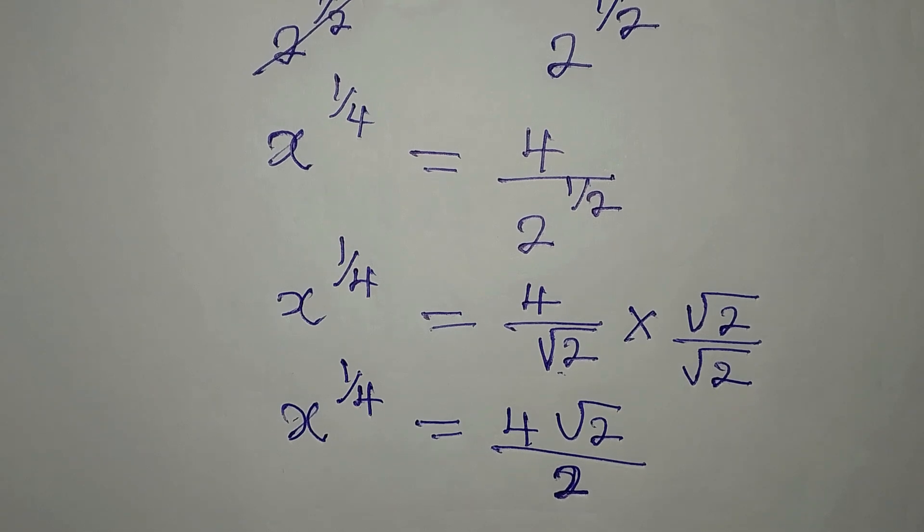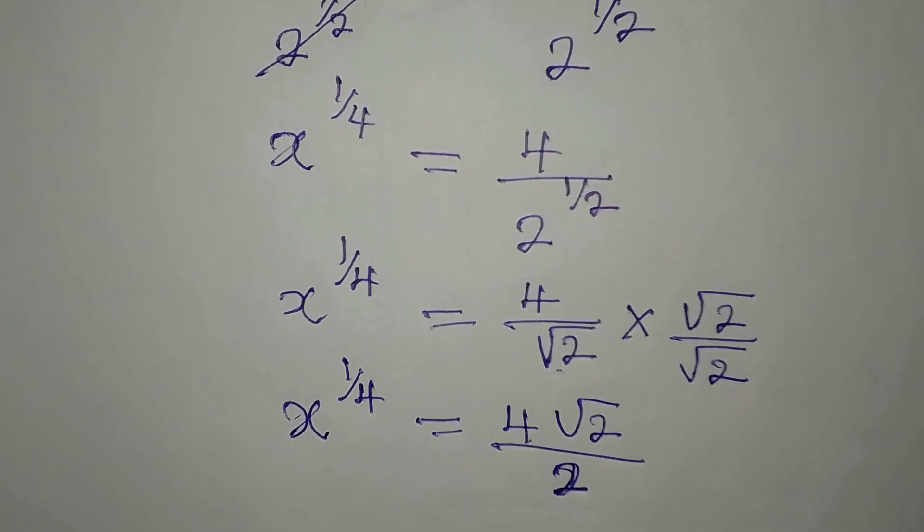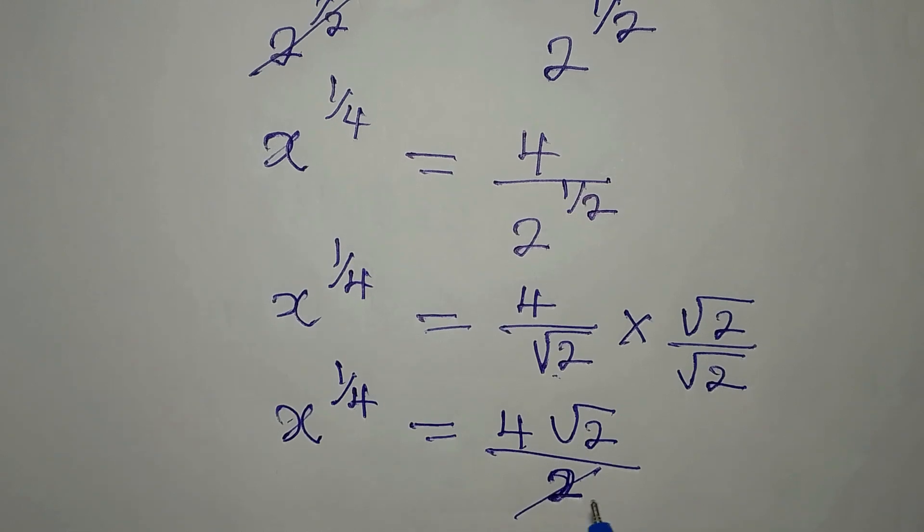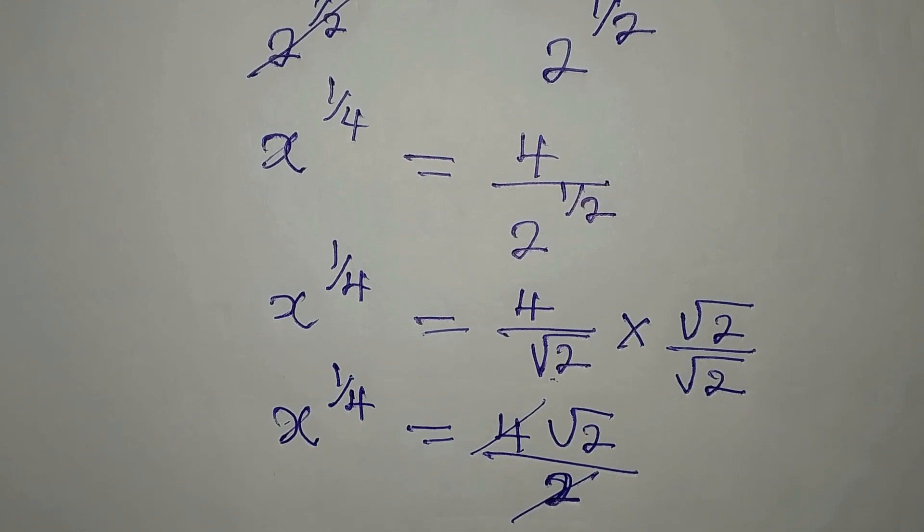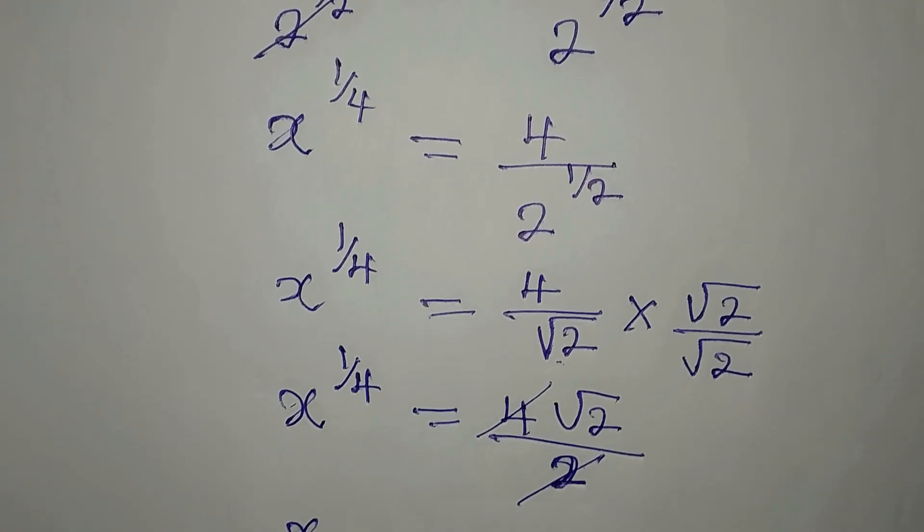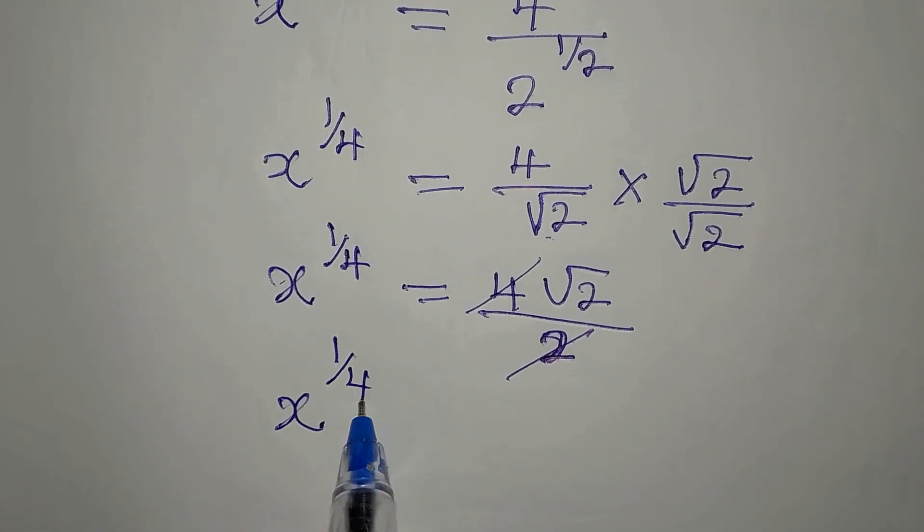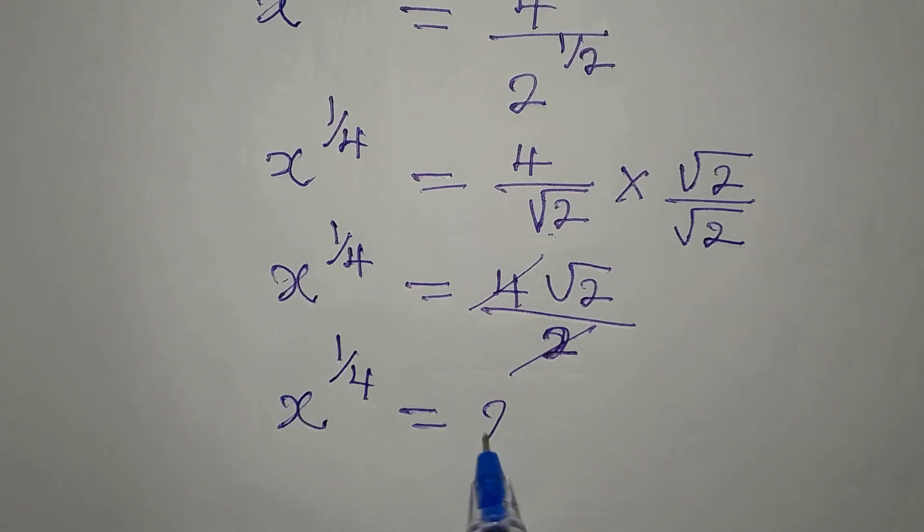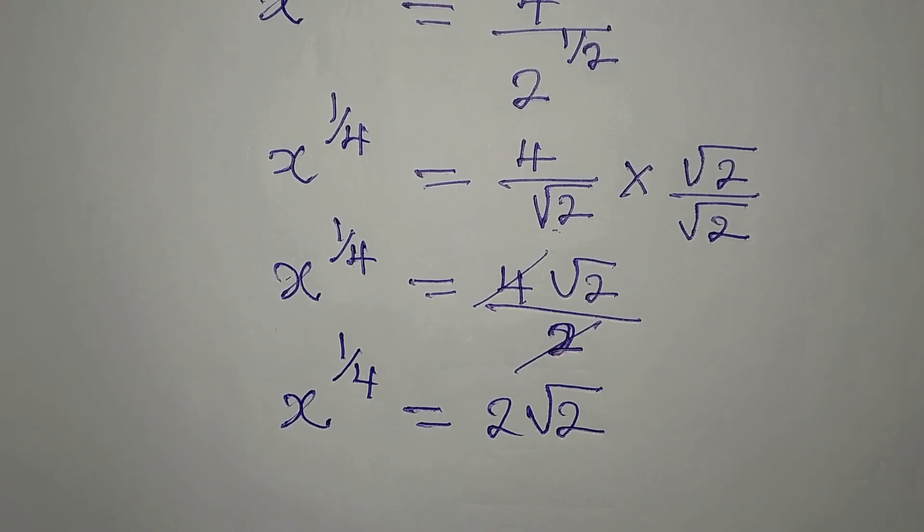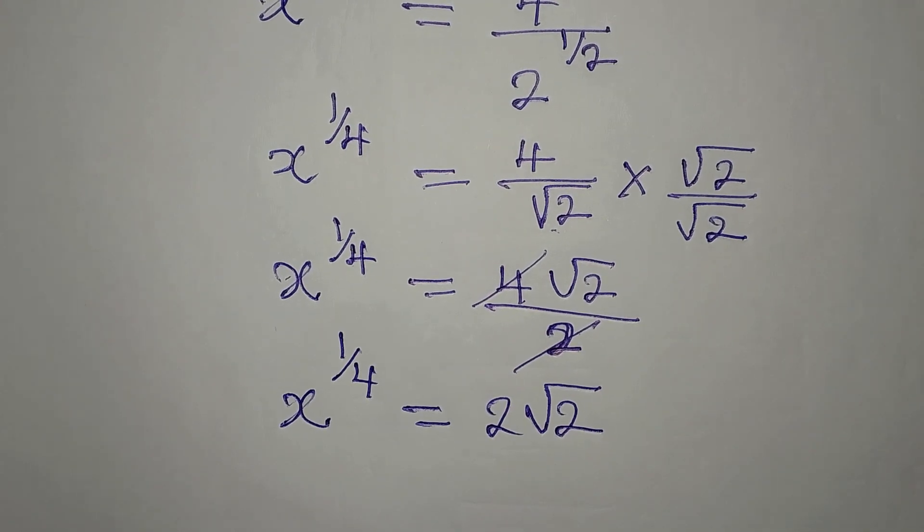Ordinarily, it will give us root 4 and square root of 4 is 2. Now, 2 here can go there. So we have x to the power of 1 over 4 to be equal to 2 root 2. Now, what again should I do?